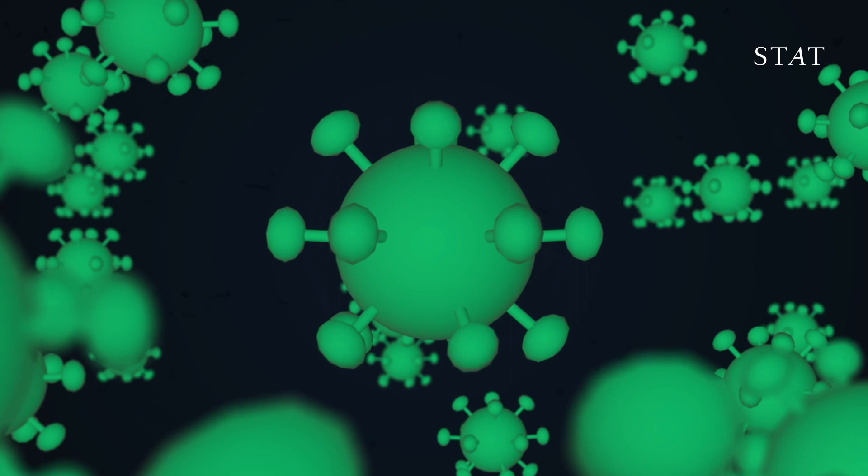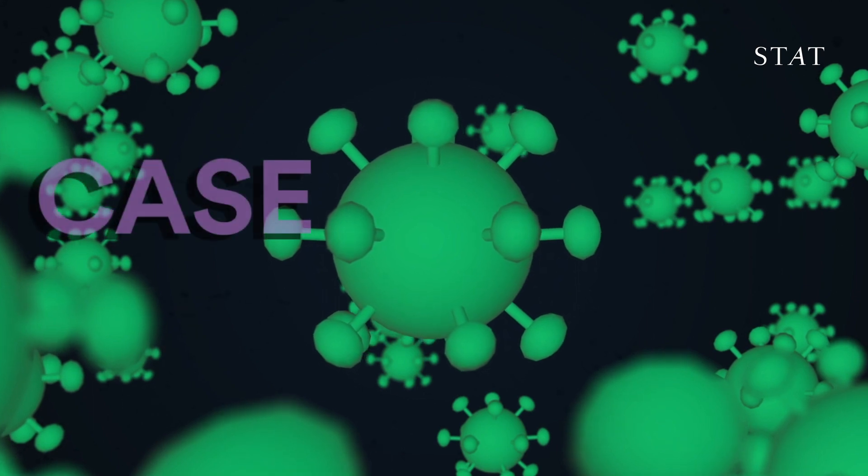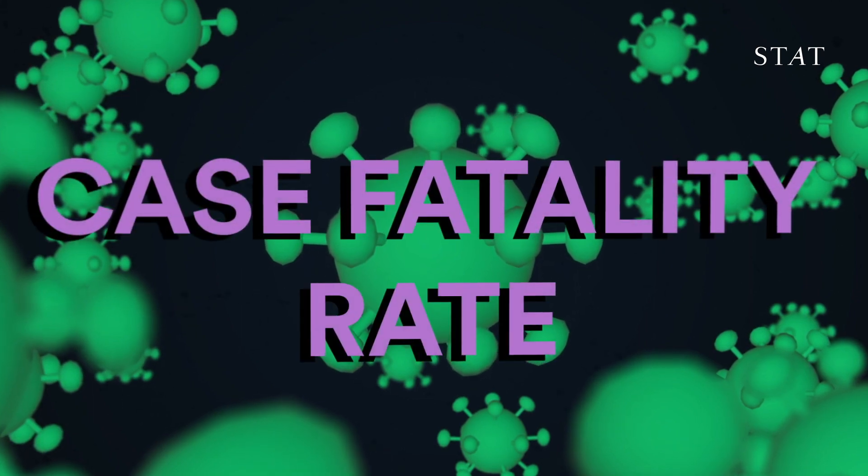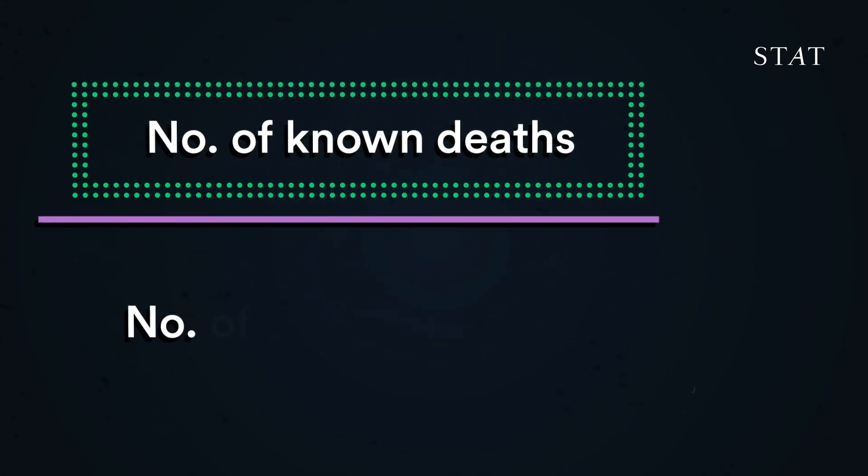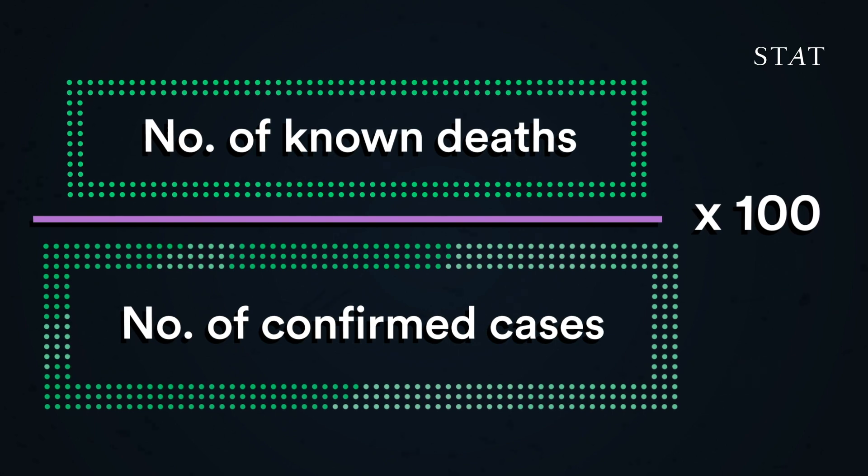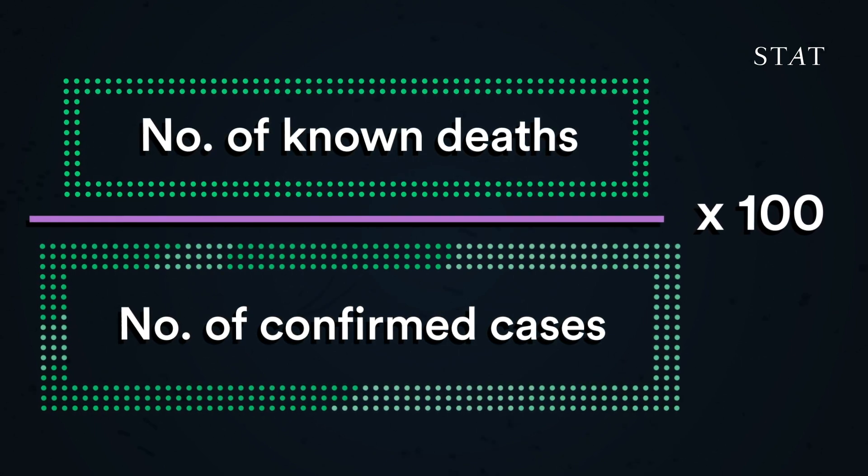One way to measure the severity of disease is by calculating the case fatality rate, or CFR. It's the number of known deaths divided by the number of confirmed cases times 100. The higher the CFR, the deadlier the outbreak.